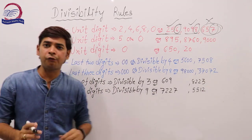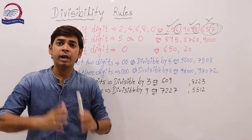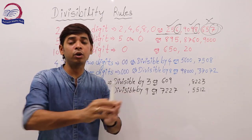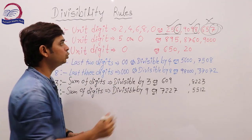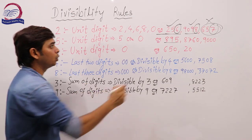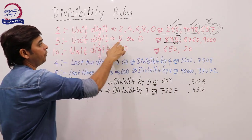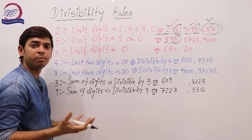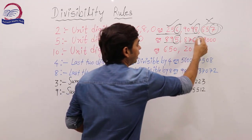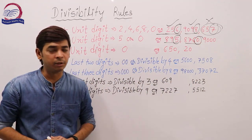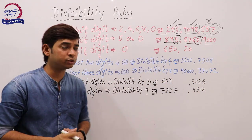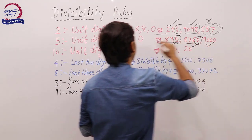Now the divisibility rule of 5. A number is divisible by 5 if its unit digit is 5 or 0. So if the unit digit is either 5 or 0, the number is divisible by 5. For example, 895 — unit digit is 5, so it is divisible by 5. And 9000 — unit digit is 0, so this number is also divisible by 5.